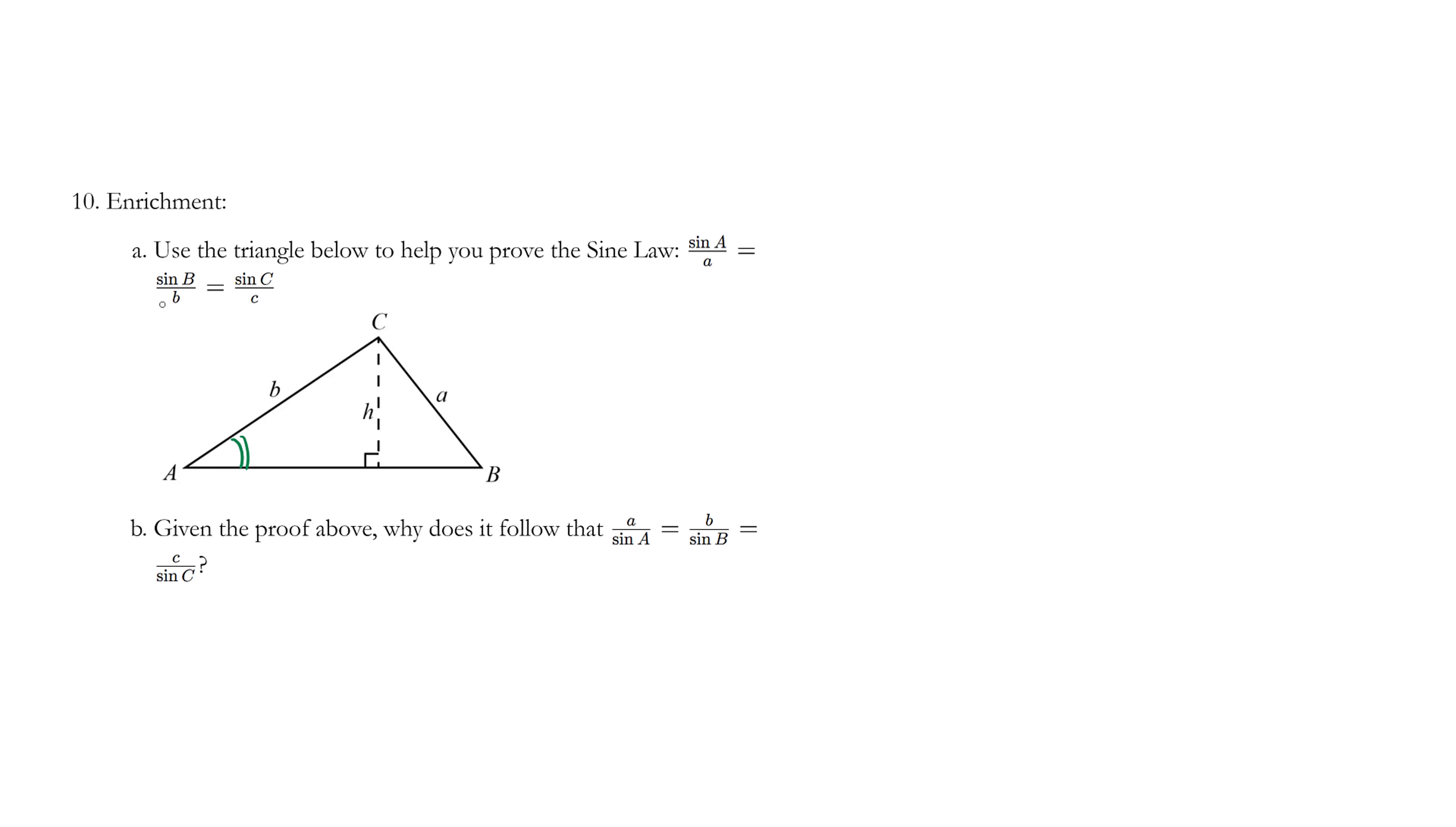We're going to focus on the sine. Sine A is equal to opposite over hypotenuse, which is H over B. Let's multiply both sides by B, we have H is equal to B sine A.